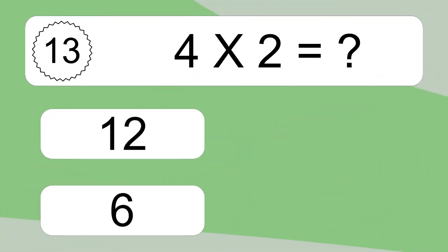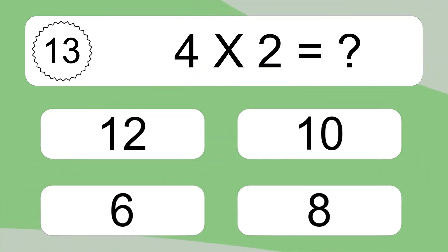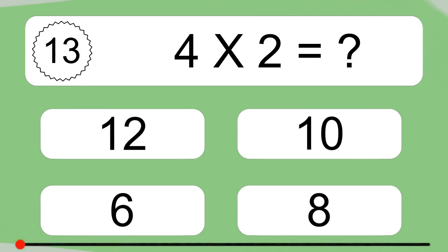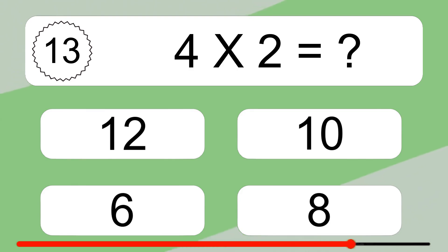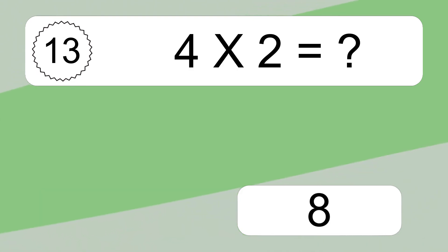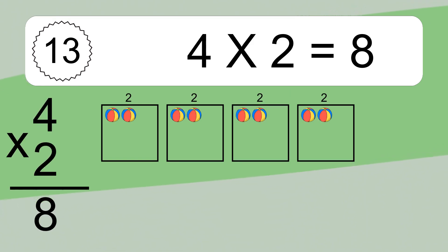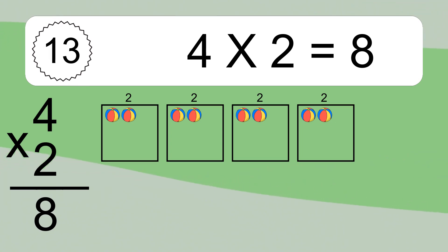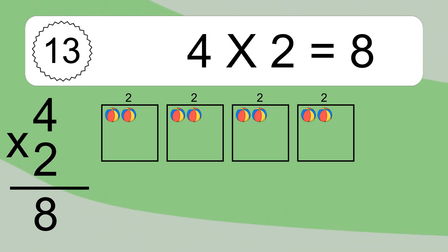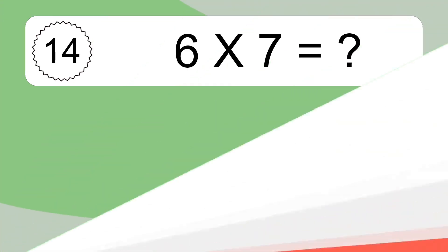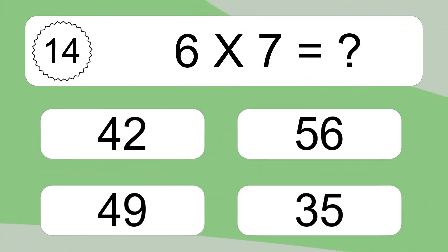4 times 2 equals what? 4 times 2 equals 8. We have 4 boxes, and each box has 2 colorful balls inside. If you count all the balls in all the boxes together, you will have 4 times 2 balls. This equals 8 balls.